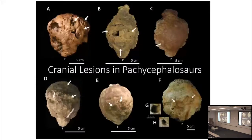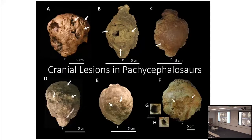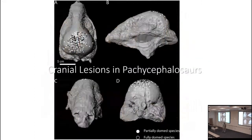I talked before, when discussing pachycephalosaurs, about the lesions on some of their heads. This is a trace fossil found on the body fossil — it's a trace fossil of the behavior of head-butting. Pachycephalosaurs were smashing or pressing their heads into each other with enough force to actually generate lesions. The little white arrows are pointing to those lesions, which tend to be concentrated on the domes of dome-headed dinosaurs.